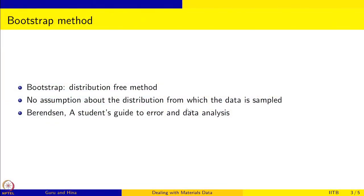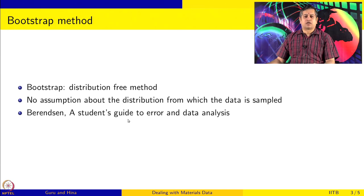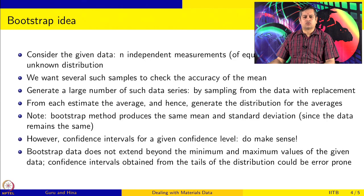In other methods, where we have data and know what probability distribution it comes from, you can give better estimates for intervals and so on. But if you do not know anything about the underlying probability distribution and cannot make any assumptions, there is a way to get an interval estimate, and that is done using the bootstrap method. It is a distribution-free method, so we are not making any assumption about the distribution from which the data is sampled. Berenson's student's guide to error and data analysis gives details of the bootstrap method, which I strongly recommend you go through.